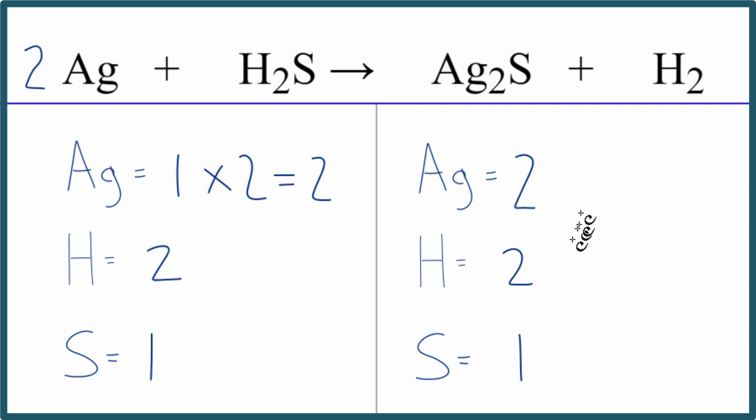And now this equation is balanced. The atoms on this side, the number and type, are the same as on this side. This is Dr. B with the balanced equation for Ag plus H2S. Thanks for watching.